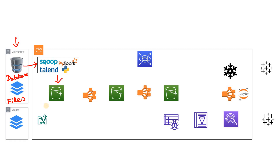Using these frameworks, they load the data into what is termed the S3 raw layer. It is called the raw layer because whatever data is ingested there is not processed — it is just raw data. We should always save the raw data so that in the future, if something goes wrong in downstream jobs and we want to backtrack, we can easily retrieve that older raw data from the S3 raw layer.